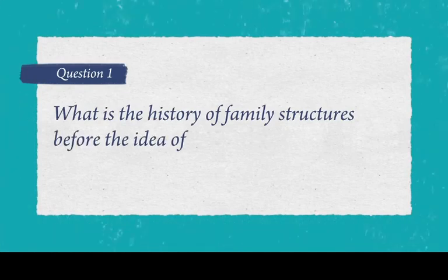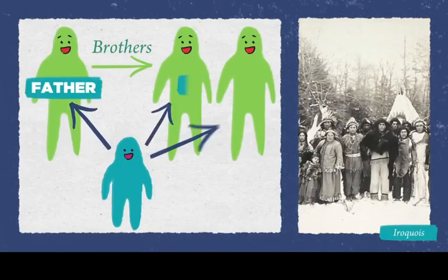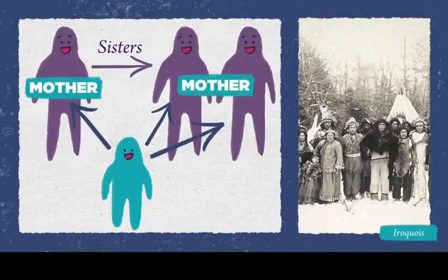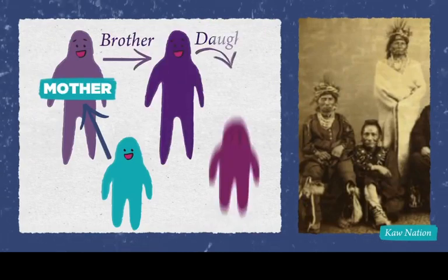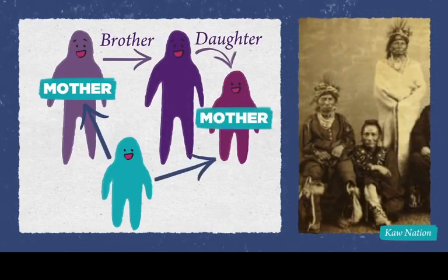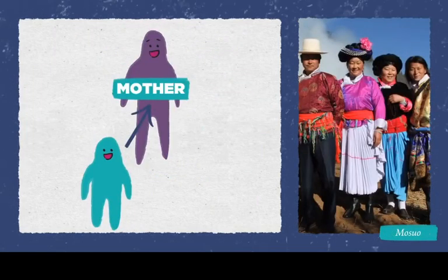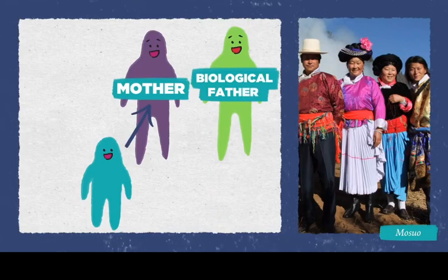What is the history of family structures before the nuclear family became shorthand for normal? The answer varies based on time period, region, and culture. Kinship — the recognition of relationships between people within the same community or biological family — plays a huge role in how we define family structure. In the Iroquois system, your father's brothers were also your father, and your mother's sisters were also your mother. In the matrilineal Mosuo culture in northern China, women freely chose their partners and who your biological father is was not considered very important at all.